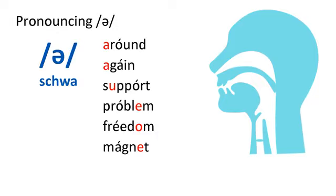Now say these words that have schwa: Around. Again. Support. Problem. Freedom. Magnet.